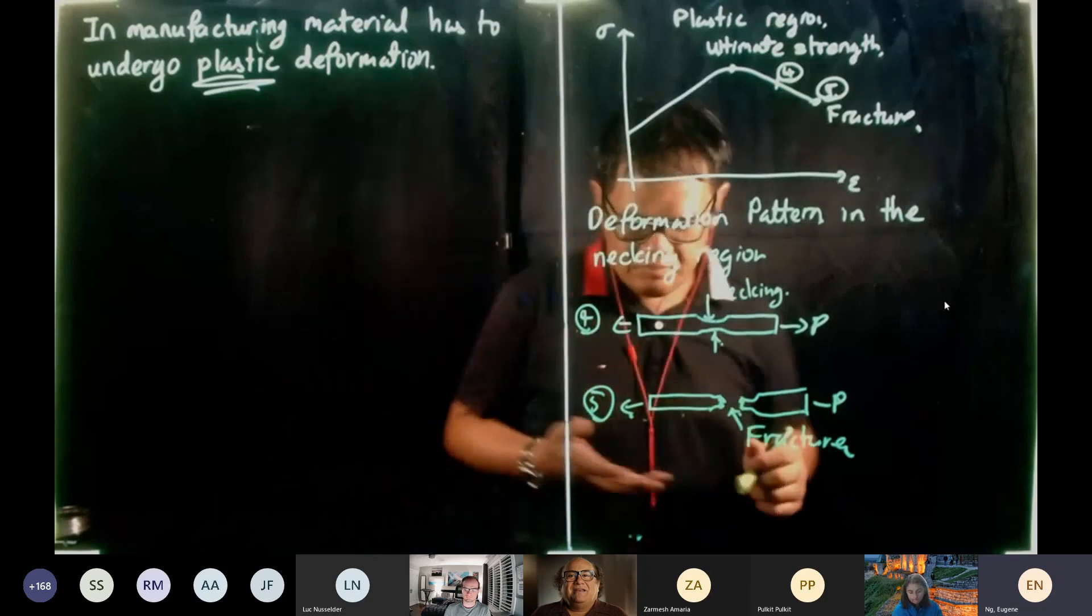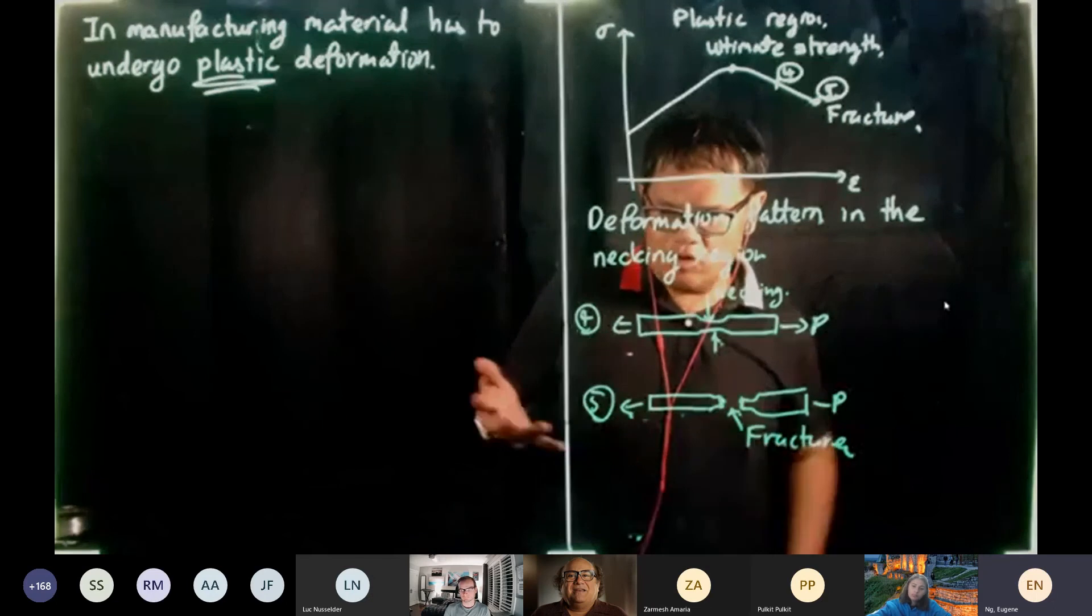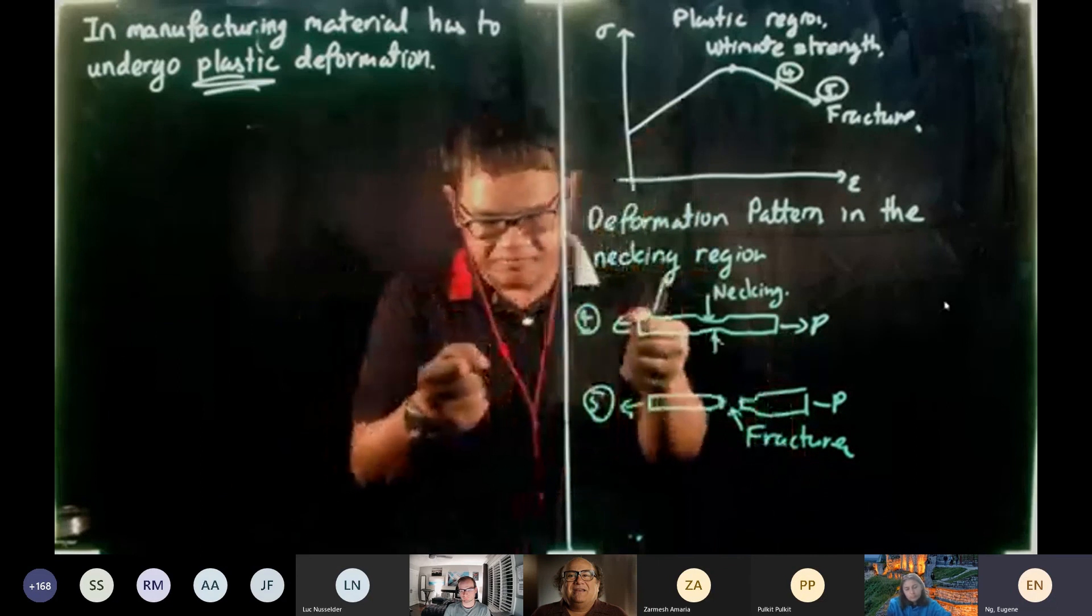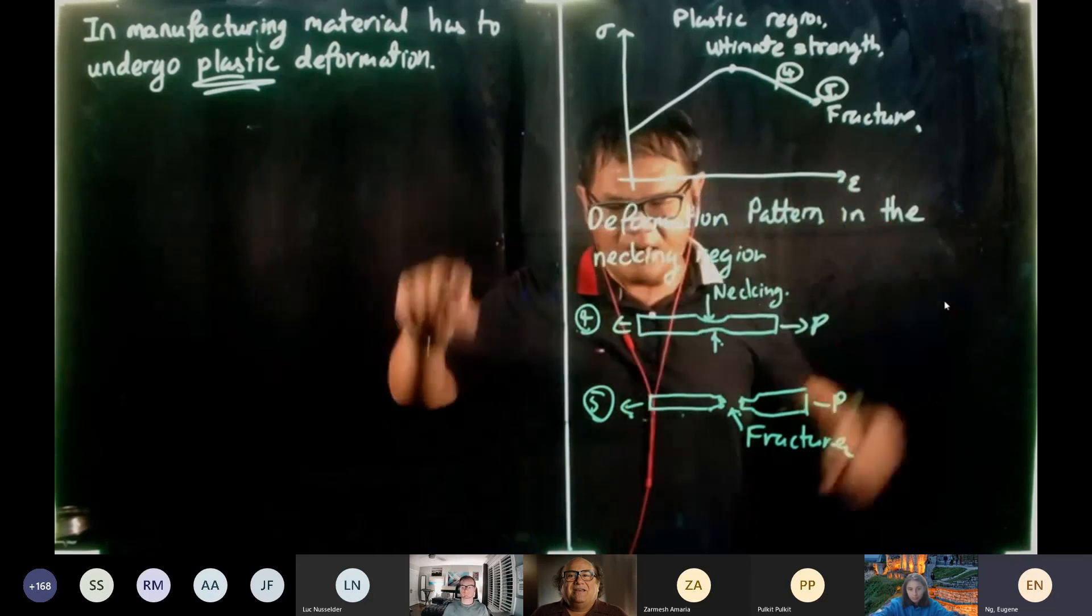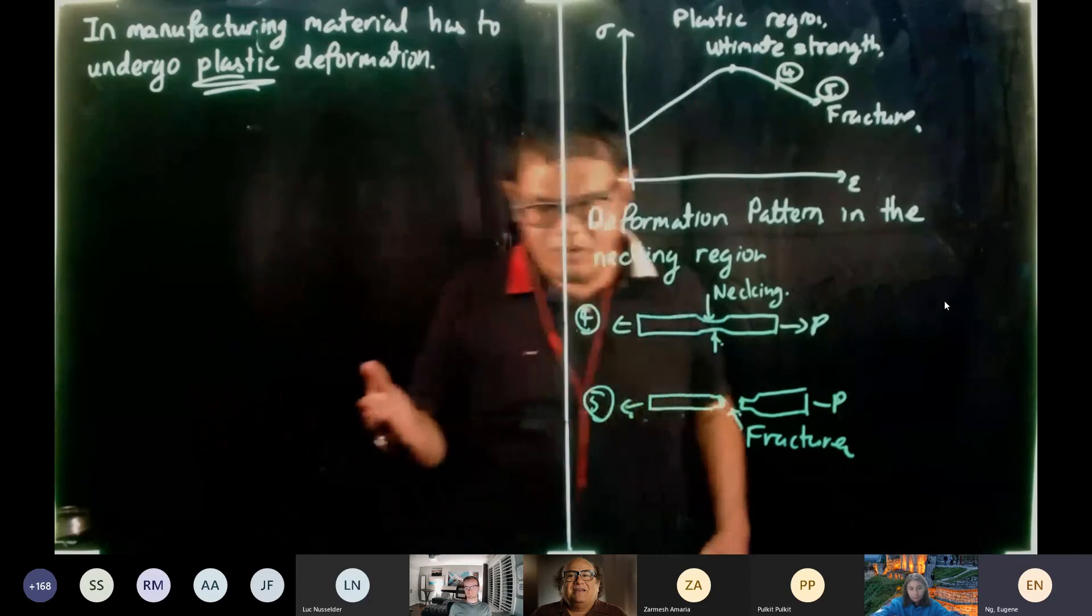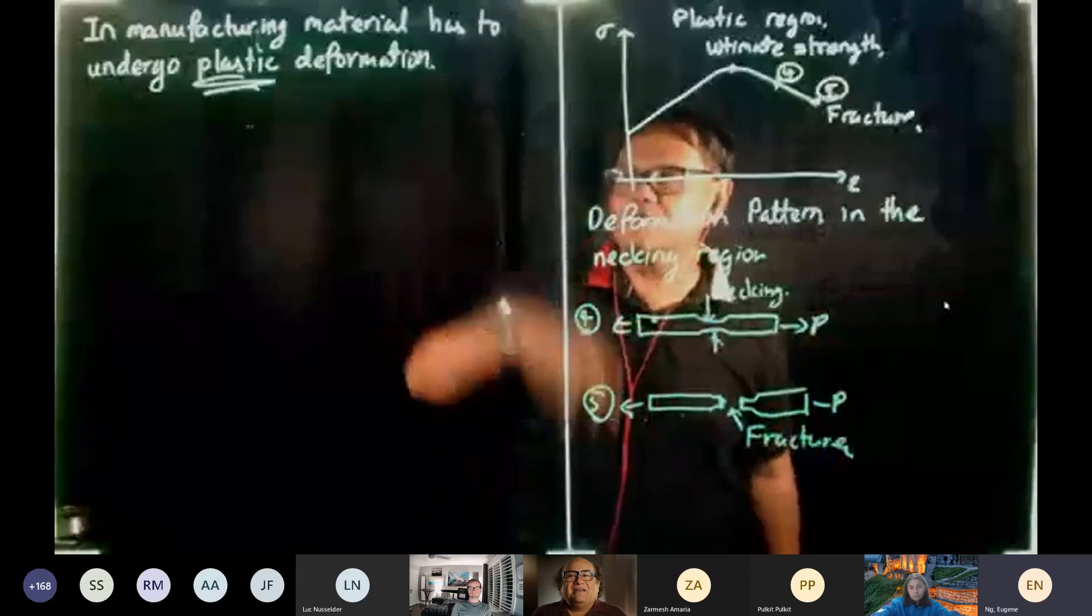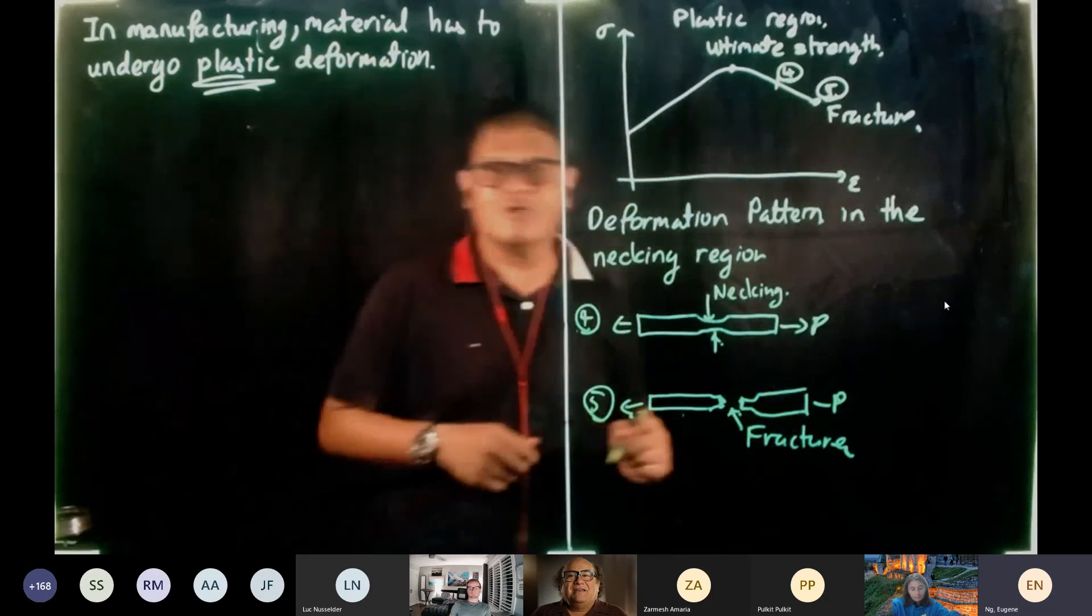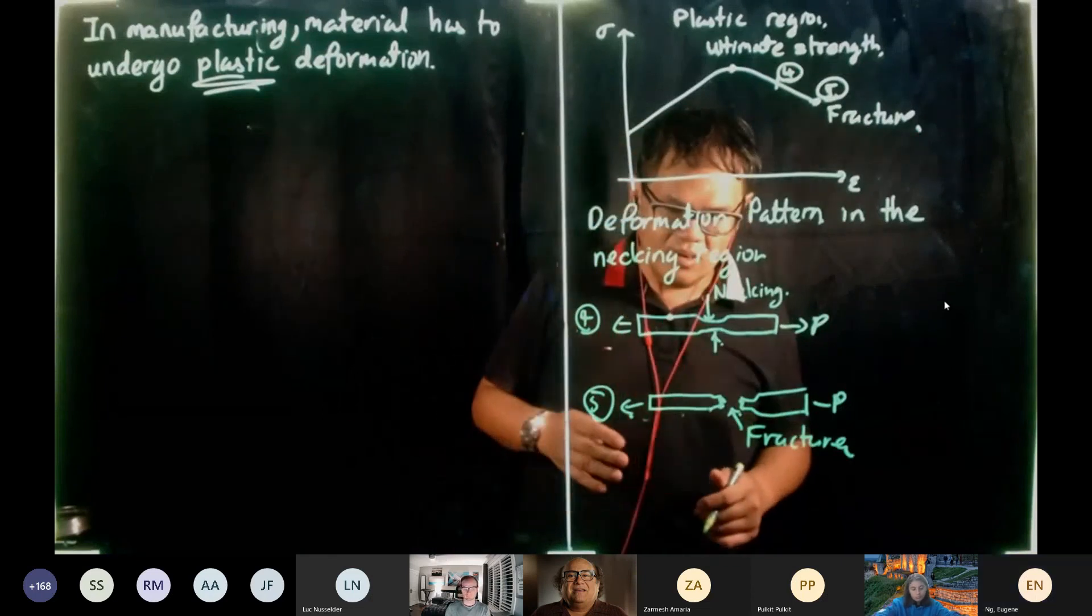In manufacturing material has to undergo plastic deformation. You cannot look at the material to go through elastic deformation. If the material original is straight and you give your client a straight material because you have not enough energy to deform the material, your client will not pay you a straight bar. He wants to have a U-shape, he will pay you a U-shape. So that's why in manufacturing, material has to undergo plastic deformation.